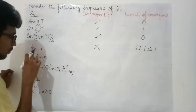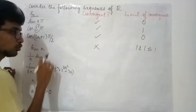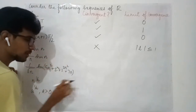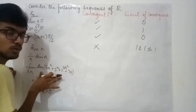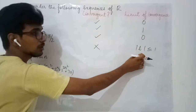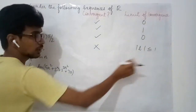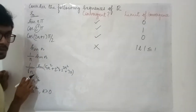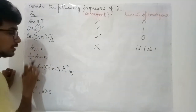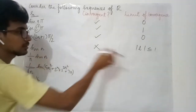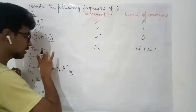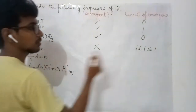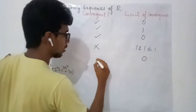For the sequences sin(n)/n and sin(n)/√n: whatever the value of sin(n), its absolute value is at most 1. The factors 1/n and 1/√n both go to 0 as n approaches infinity. So these factors drive the limit to 0, and hence both sequences are convergent.